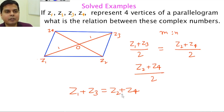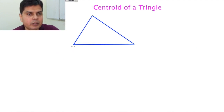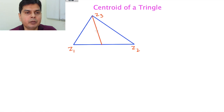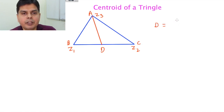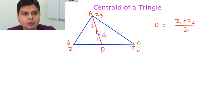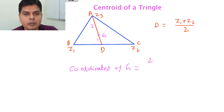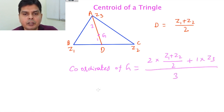Let's find the centroid of a triangle with vertices z1, z2, z3. Draw the median from z3 to midpoint D of z1z2; D has coordinate (z1 + z2)/2. The centroid G divides this median in ratio 2:1. Using the section formula with m = 2, n = 1: G = [2·(z1 + z2)/2 + 1·z3] / (2 + 1) = (z1 + z2 + z3) / 3. So the centroid is simply the average of the three complex numbers.